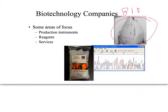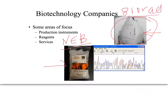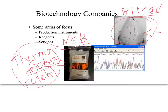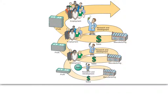Biotechnology companies focus on many different aspects. Someone has to make the equipment — like BioRad, a big company in California that makes gel imagers, which we have in our biotech lab. People also have to make the reagents and chemicals, enzymes, and primers — companies like New England BioLabs and Thermo Fisher do this. There's also a huge IT component called bioinformatics — someone has to understand the computer software for things like DNA sequencing programs.